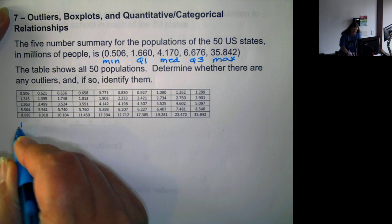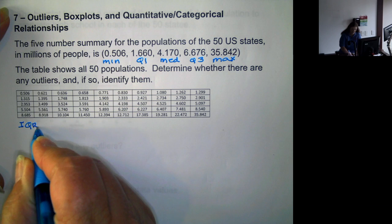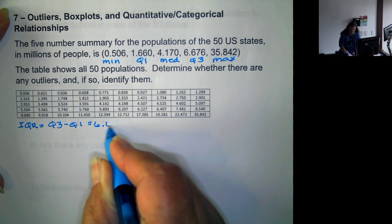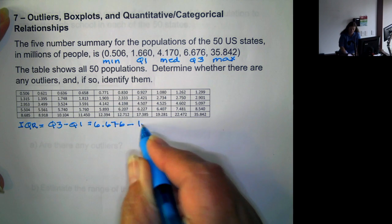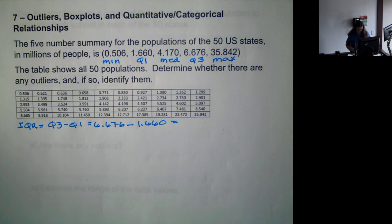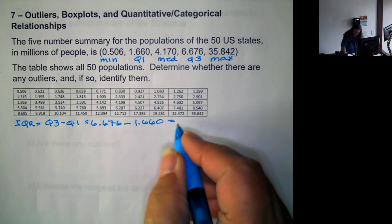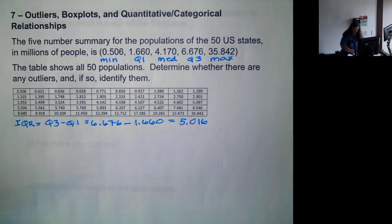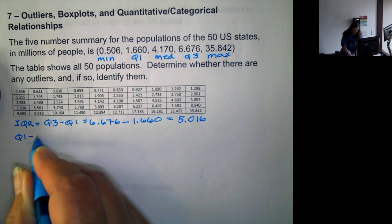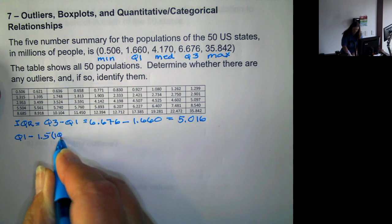Well, to determine if they're outliers, the first thing we need is the interquartile range. Remember, that's Q3 minus Q1, so it would be 6.676 minus 1.660. So, 6.676 minus 1.660 is 5.016. Now, to determine outliers, we take Q1 minus 1.5 times the IQR.